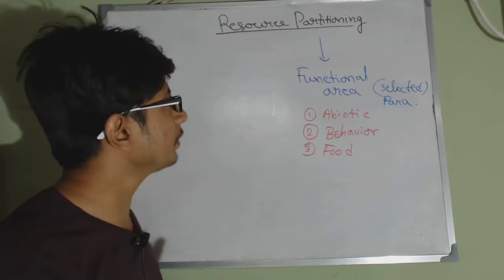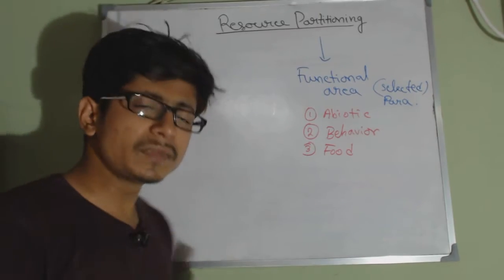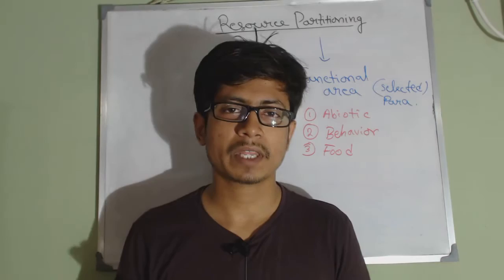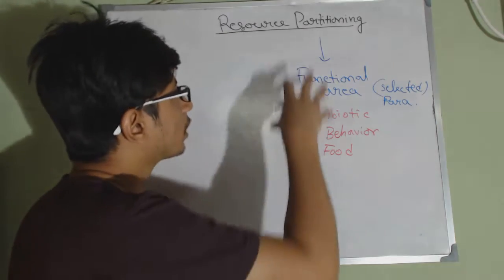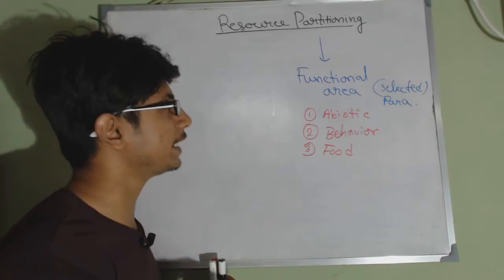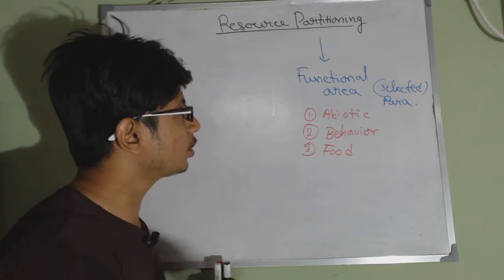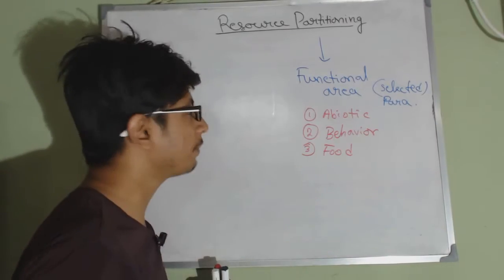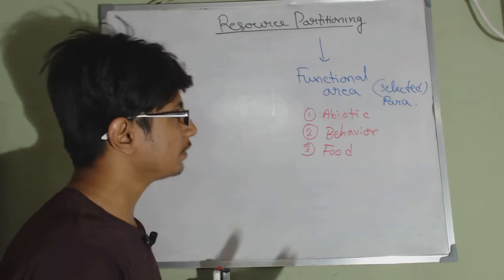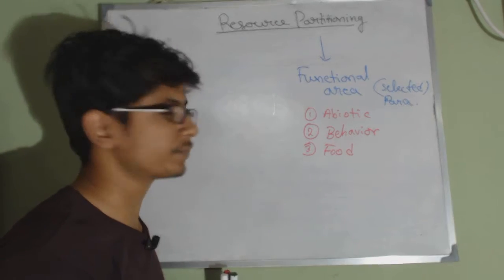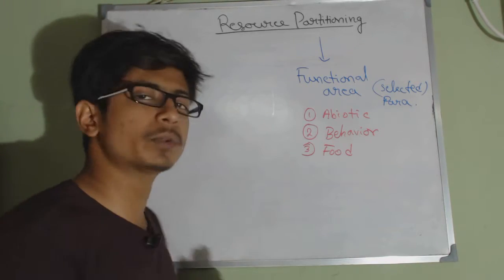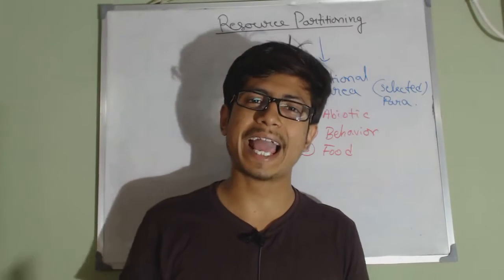Resource partitioning relies on a simple idea. A niche of an organism means its functional area in the ecosystem, which includes the abiotic factors of the environment, behavior of the organism, and the food source of that organism. These three things together for an organism are known as a niche or ecological niche of that organism.